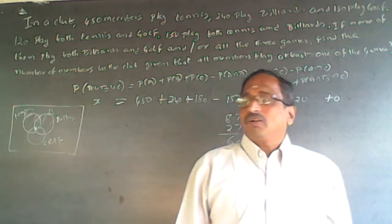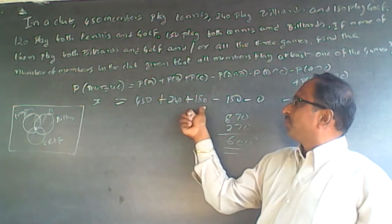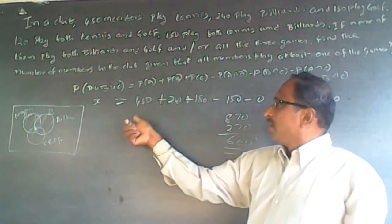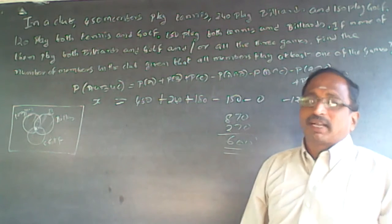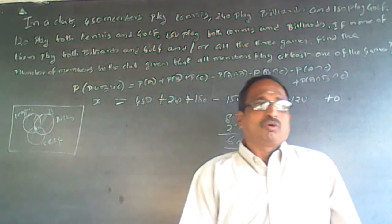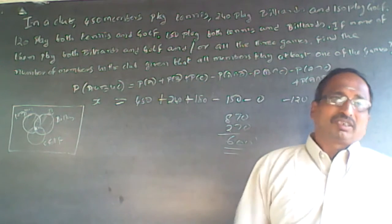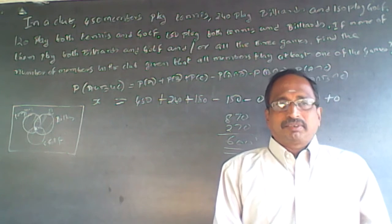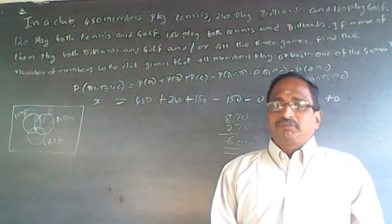Once you understand the portion, once you know how to do all this, just simply add all this following the formula. Just to understand, I drew the Venn diagram. Don't do that in an exam, it wastes time. Just add and subtract. Understand the question. Subscribe to my channel, I will be adding questions now and then. Wish you all the best.